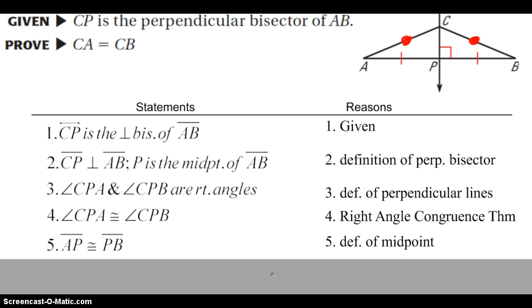We have all our information marked now. We know the angles are congruent because they're right angles. So if this is a right angle, this is a right angle. I also know that AP is congruent to PB.